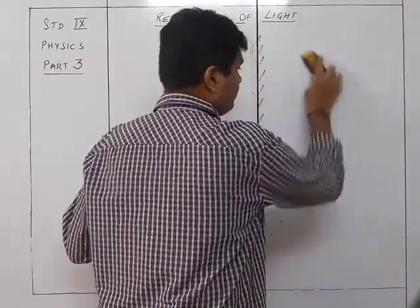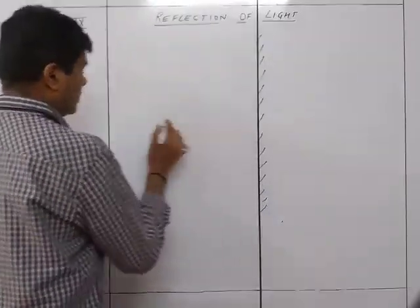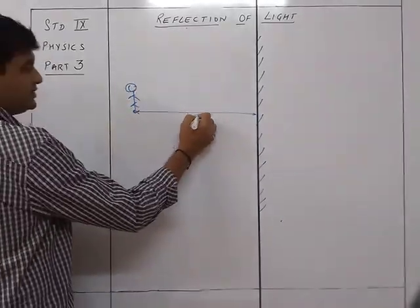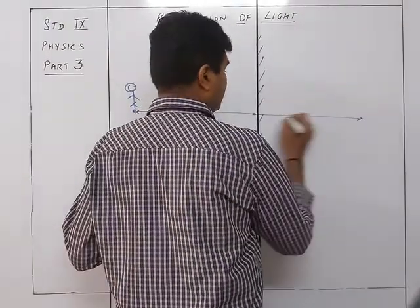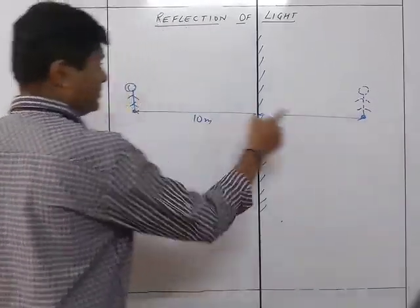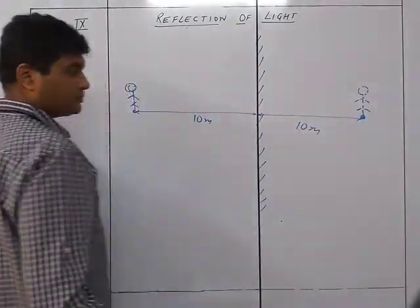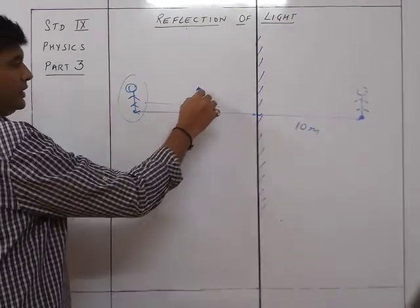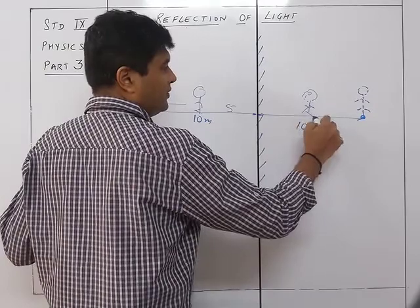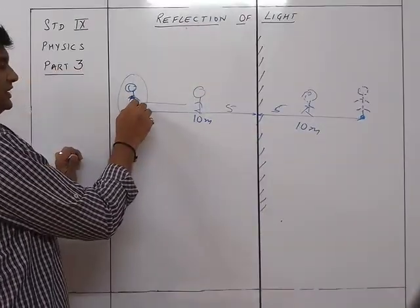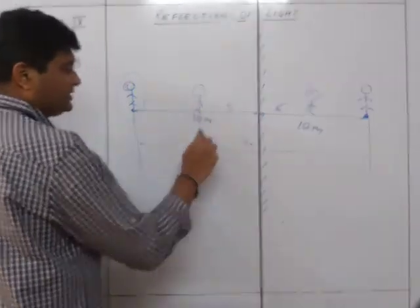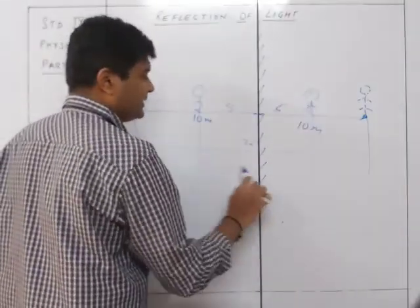For example: a person standing 10 meters from a mirror has their image 10 meters behind the mirror, so the total object-to-image distance is 20 meters. If that person moves closer to 5 meters from the mirror, the image also moves to 5 meters behind the mirror. The total object-to-image distance is now 10 meters.